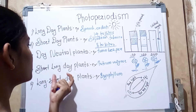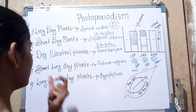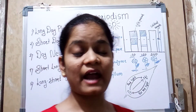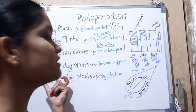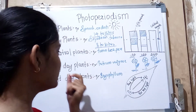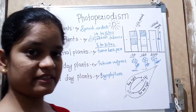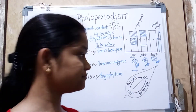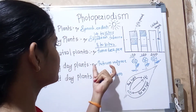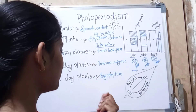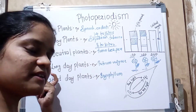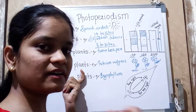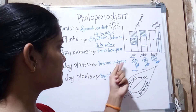The fourth is the short-long day plant. These are usually long day plants, but at the initial stage of life they require a short day. So initially they require short day conditions, and later they require long day conditions to flower. An example is Triticum vulgare.